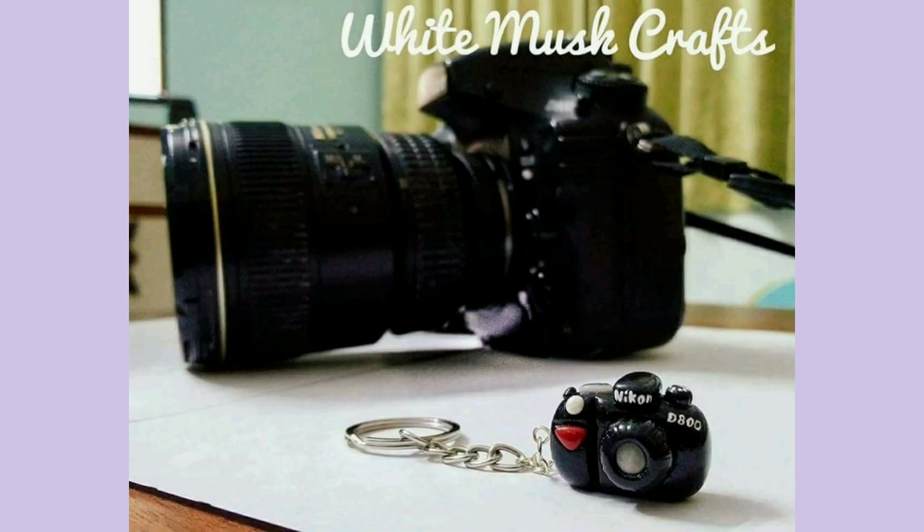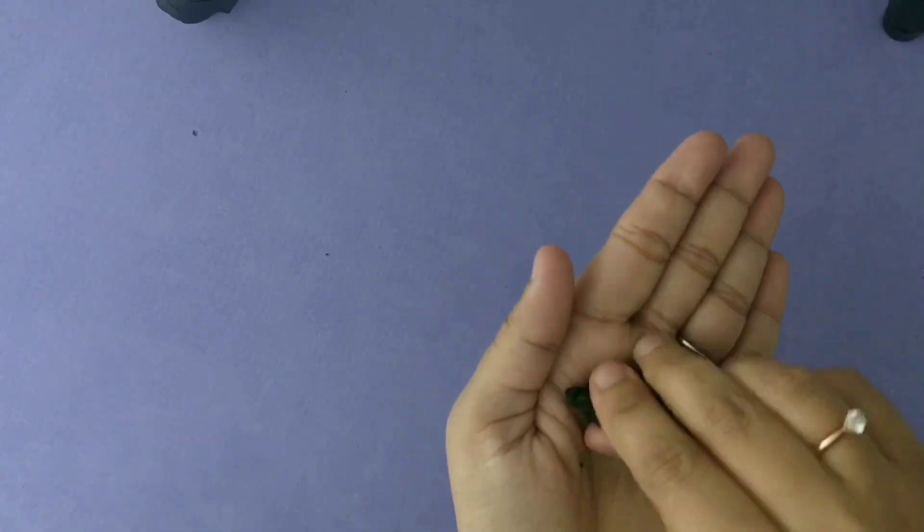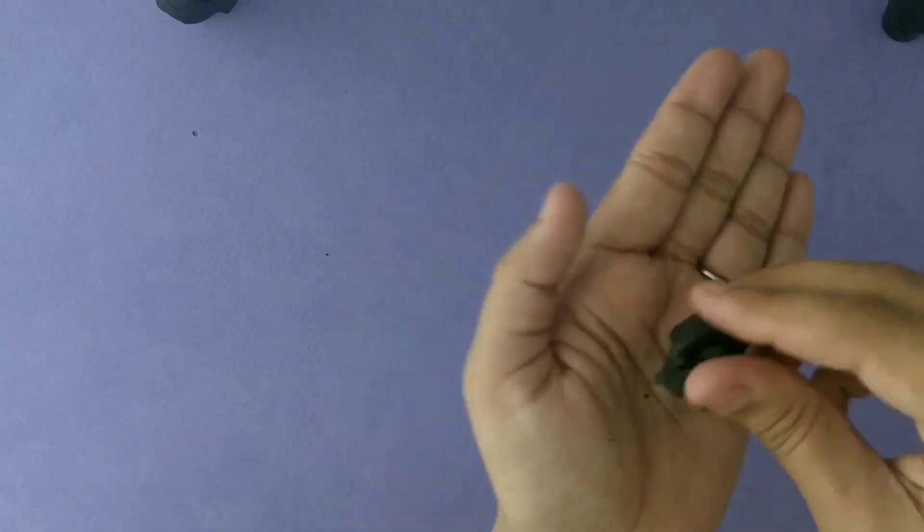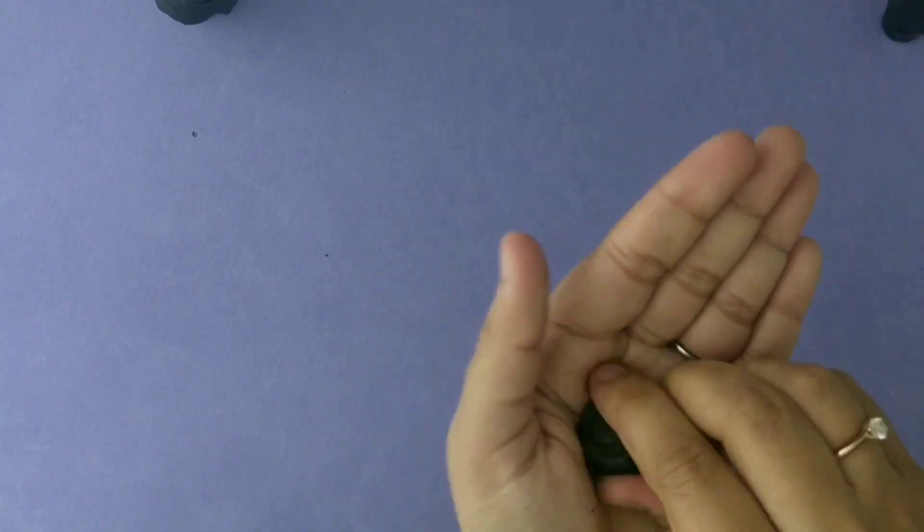Next in the list is this cute tiny camera keychain. For both keychains today I have used baked clay or polymer clay, but you can use any air dry clay or any other material.